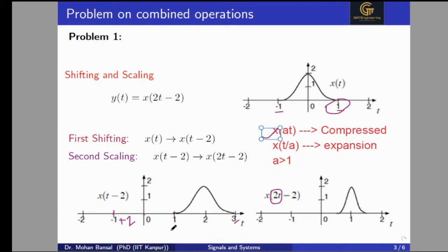Whatever we get after the shifting, we divide all the time axis values by two to get the signal at that location. So now the signal will start from 0.5, with the center at two divided by two which is one, and the signal will end at three divided by two which is 1.5. So the signal starts at 0.5, has center value at one, and ends at 1.5. This is the precedence rule: first apply shifting by factor of two, then scaling by factor of two. Here t is positive, so there is no time reversal applied.